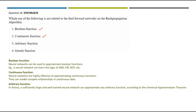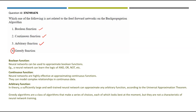Arbitrary functions: according to the universal approximation theorem, a sufficiently large and well-trained neural network can approximate any arbitrary function — so this is also involved in feed-forward networks. The answer is option four, greedy function. Greedy algorithms make a series of choices that look best at the moment, but they are not a characteristic of neural network training.